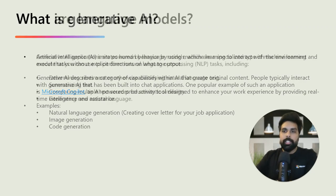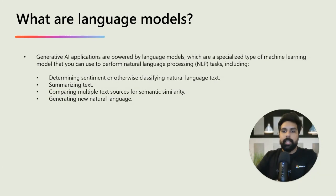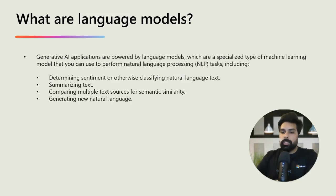Generative AI applications work using language models, which are special AI programs that understand and generate human language. These models help AI analyze text, summarize information, compare different text and even create new sentences just like a person would do.